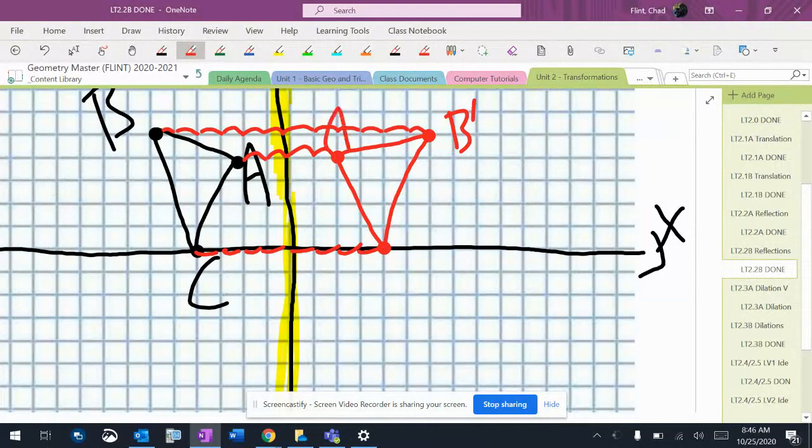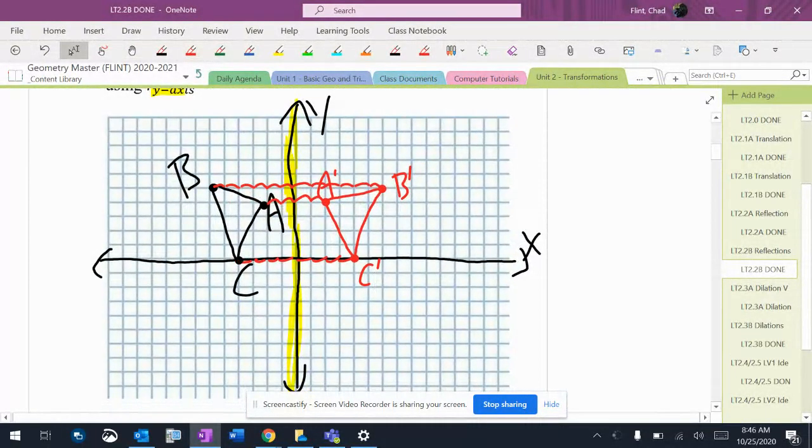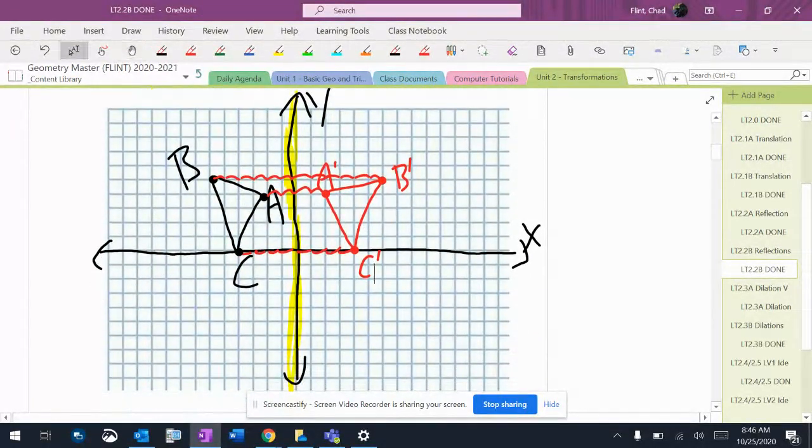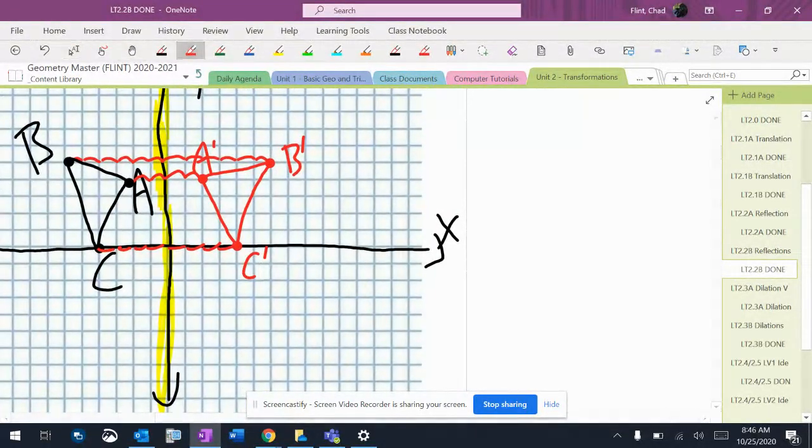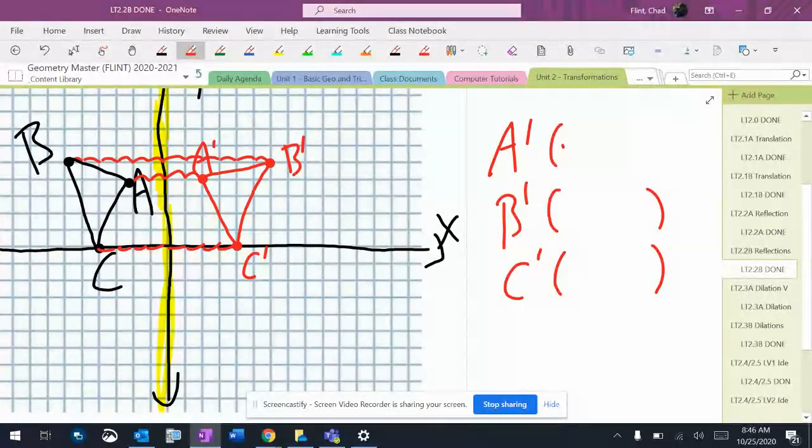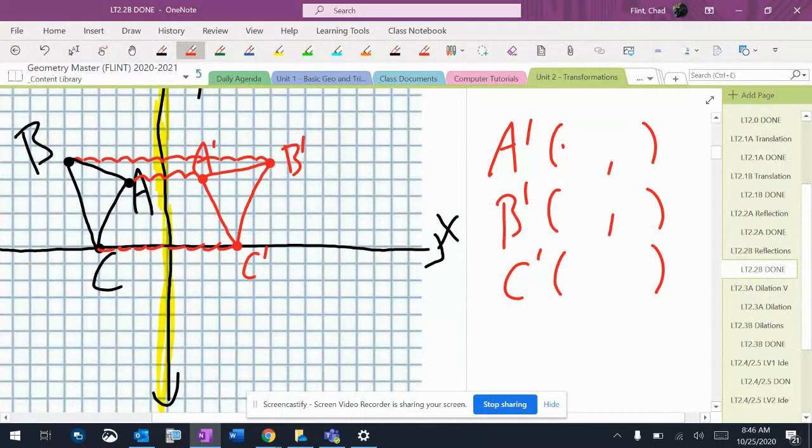So B prime, A prime, C prime. Now, it doesn't say state the coordinates in the problem. But remember, I told you guys, if it says state the coordinates sometimes - I forgot to write down 'state the coordinates' when I was doing practice problems, because I state the coordinates every single time. So make sure that as you do some of these problems, you actually state the coordinates.